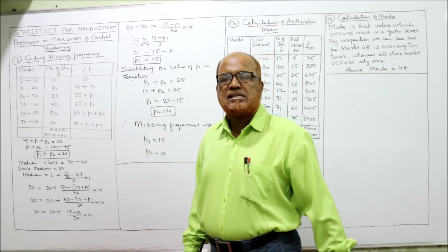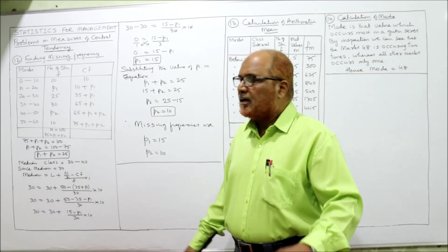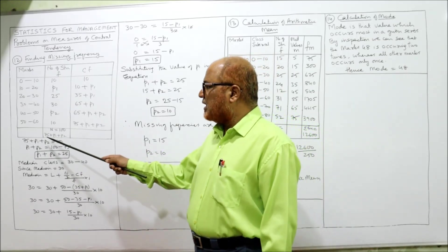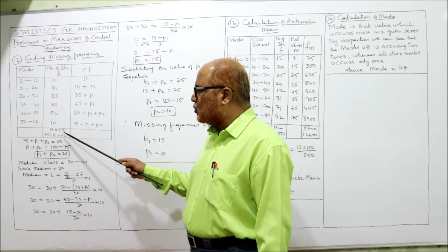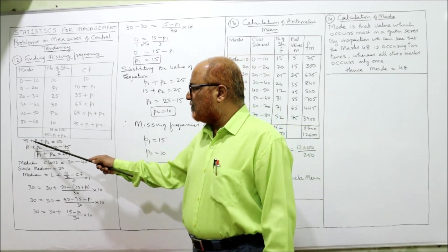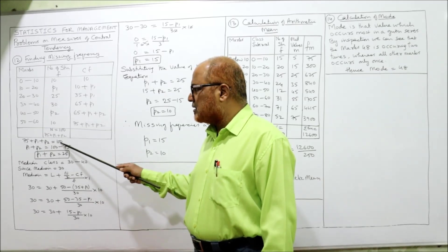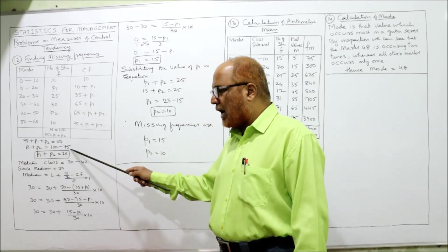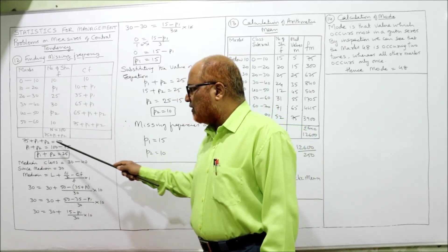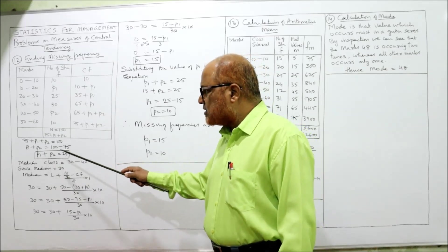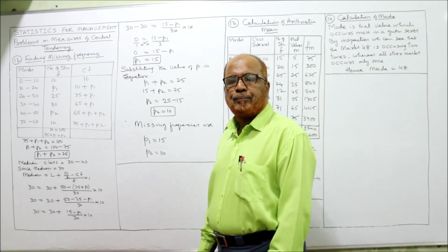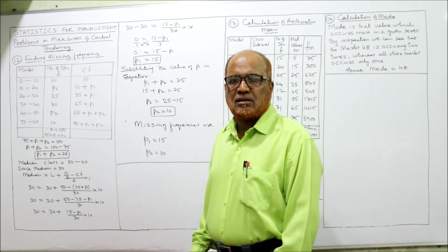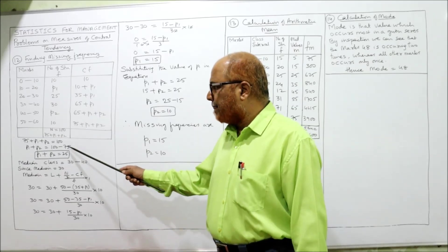So 75 + p1 + p2 = 100. Keeping p1 and p2 on the left-hand side and taking 75 to the right-hand side: p1 + p2 = 25. This is our first equation — the total of both missing frequencies is 25.